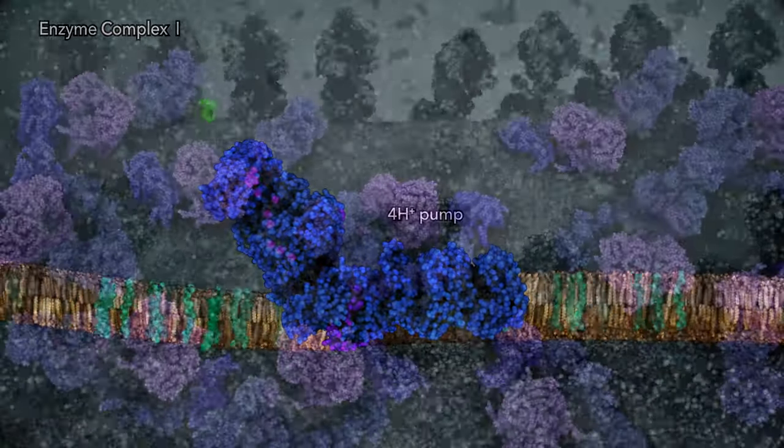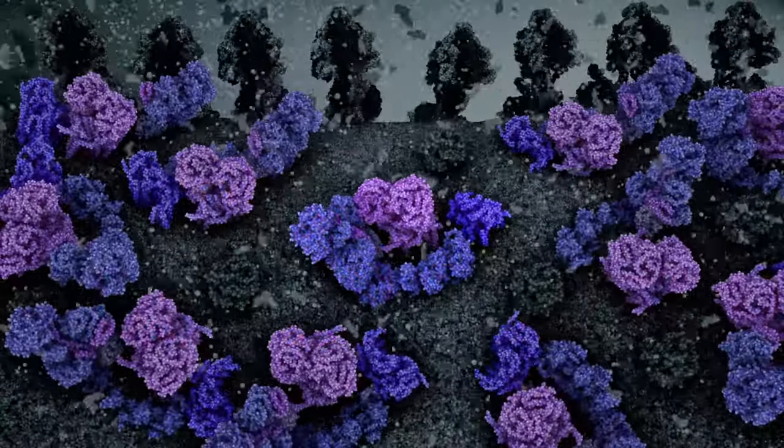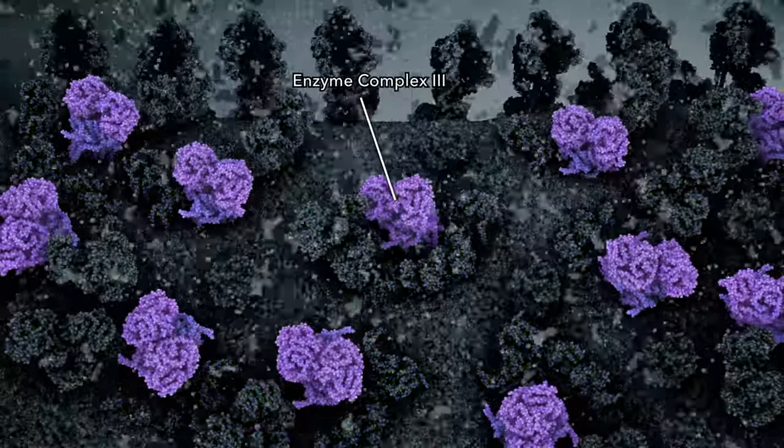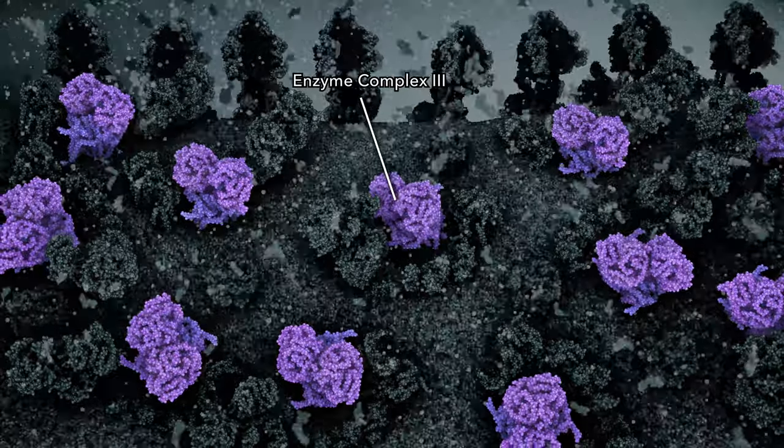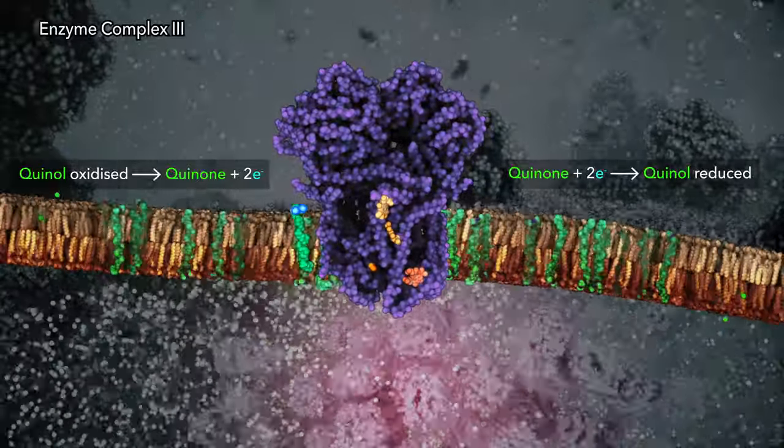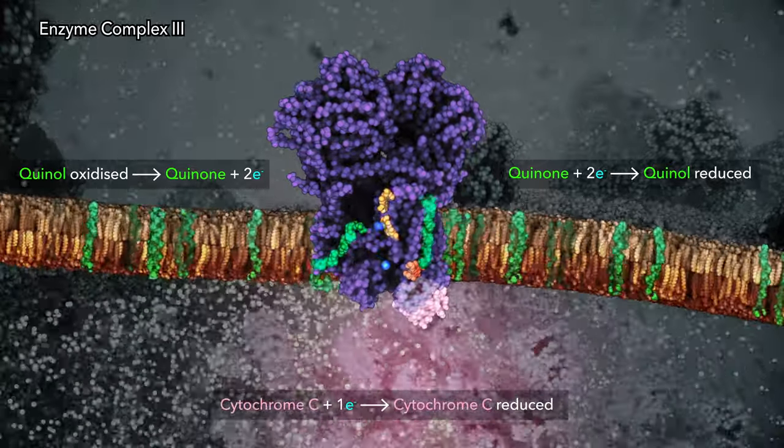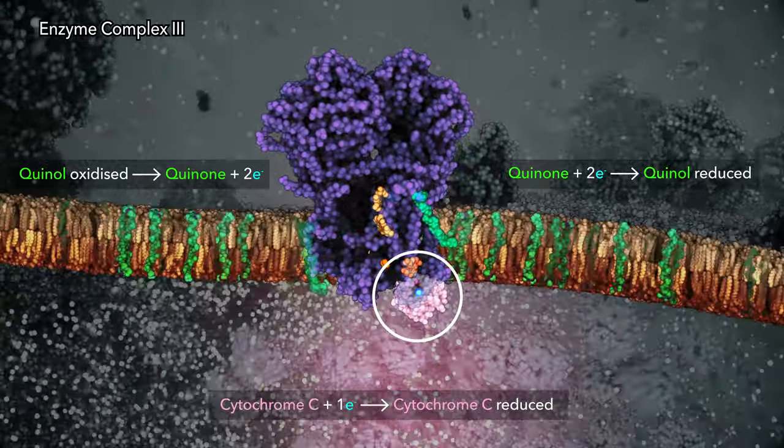The second step of the electron transport chain is performed by enzyme complex 3. The mechanism of complex 3 separates electrons from coenzyme Q, passing one electron to cytochrome C, which is reduced.